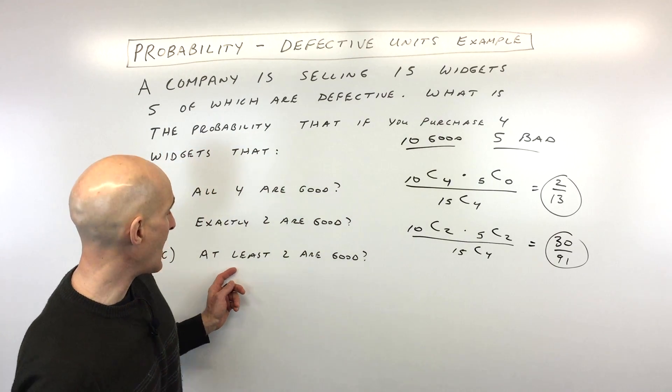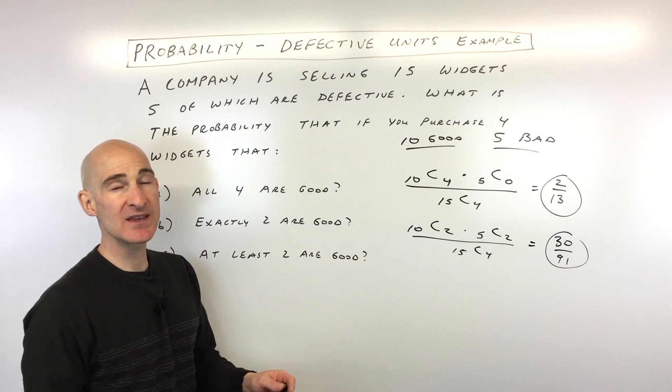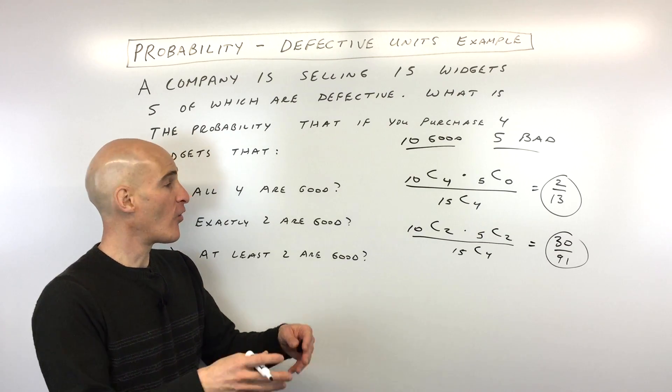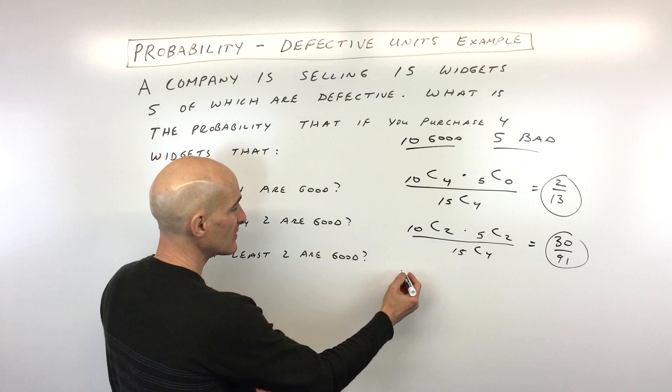Okay, and then the last one, part C, we have at least two are good. So that means at least, that means two are good, three are good, or four are good. Okay, so let's go ahead and calculate that.